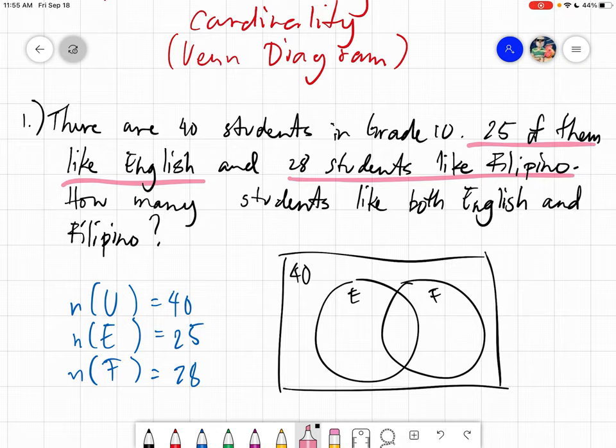So ngayon ang tanong, how many students like both English and Filipino? Now let's observe yung given natin. Etong total netong E is 25, and etong F is 28. Pero you will notice na all in all ang students ay 40. So kaso pag pinag-add yung 25 and 28, that is 53. So sobra tayo dun sa total na 40. So ibig sabihin it's very obvious dito na may mga students na nandito sa gitna, here in the middle, where these people in the middle they like both English and Filipino.